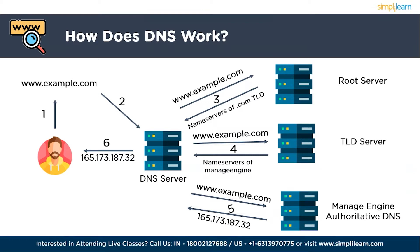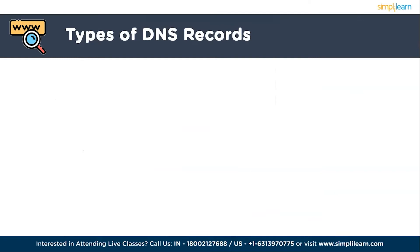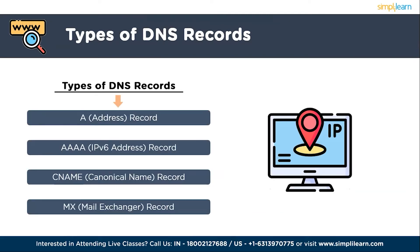Now, how does the authoritative DNS server know which IP address corresponds to a domain name? That's where DNS records come in. The types of DNS records include: the A record, which maps a domain name to an IPv4 address; the AAAA record, which maps a domain name to an IPv6 address; the CNAME (Canonical Name) record, which creates an alias for a domain name; and the MX (Mail Exchanger) record, which specifies mail servers responsible for receiving email.